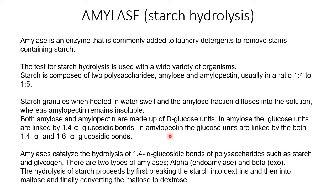In amylopectin, the glucose units are linked by both 1,4 alpha-glucosidic bonds and 1,6 alpha-glucosidic bonds, because amylopectin has branching. Amylase catalyzes the hydrolysis of 1,4 alpha-glucosidic bonds of polysaccharides such as starch and glycogen. The hydrolysis of starch proceeds by first breaking starch into dextrin — small chains of glucose units — then into maltose, which has two glucose units, and finally converting maltose to dextrose.